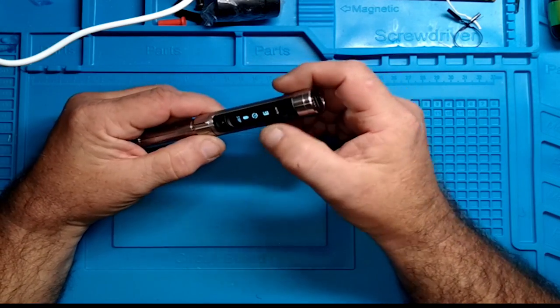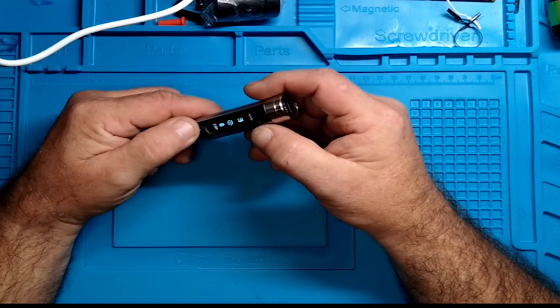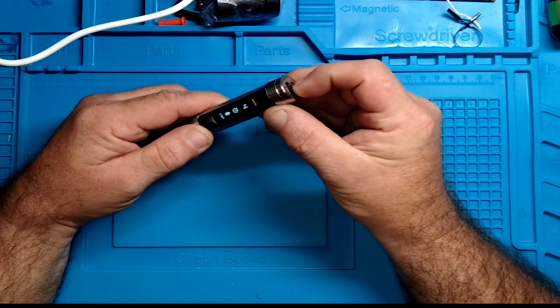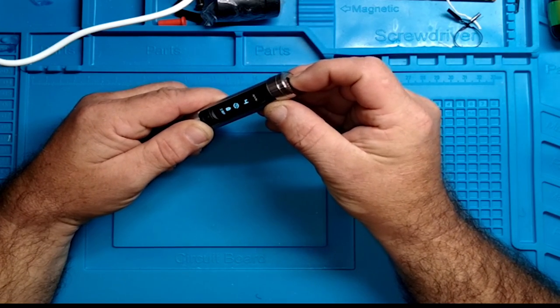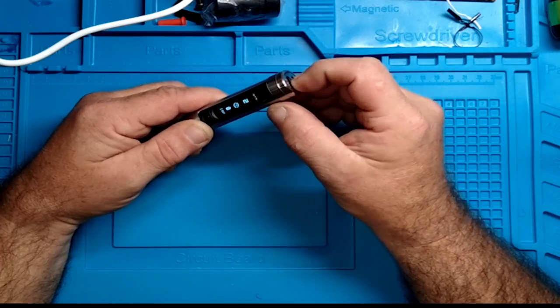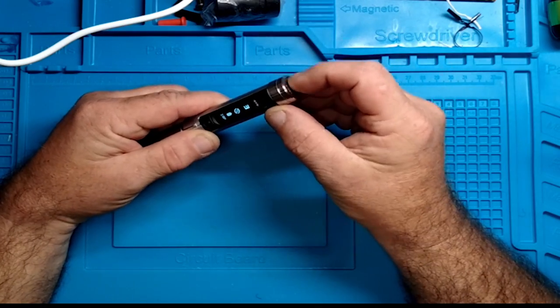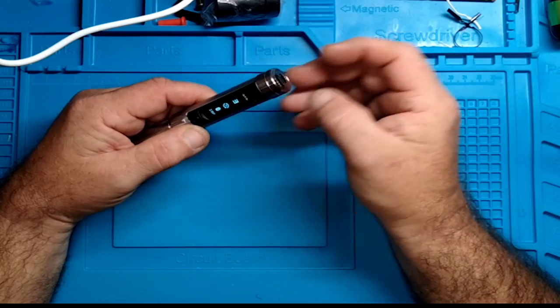And then you've got torque settings, which the torque settings are, let's see, it's 1, 2, 3, 4, and 5, and wraps back around again. You set that with the set button, and I've got it set on about 3.